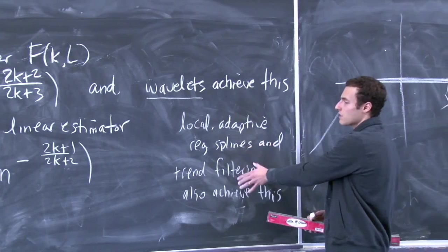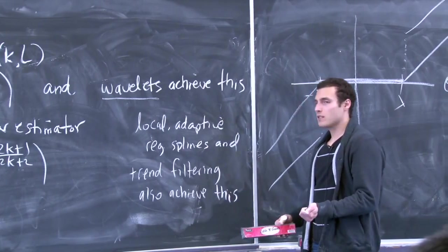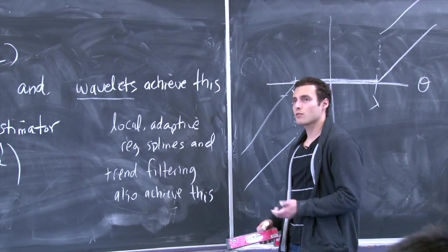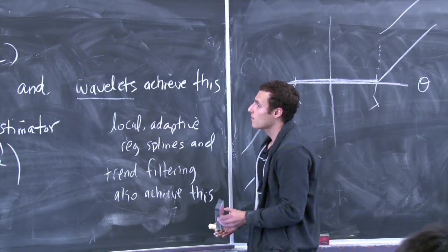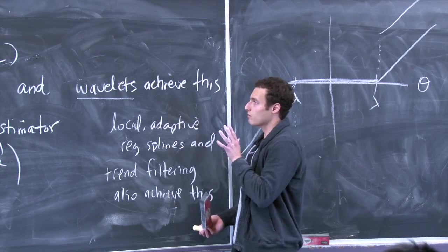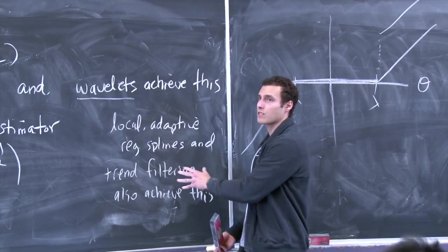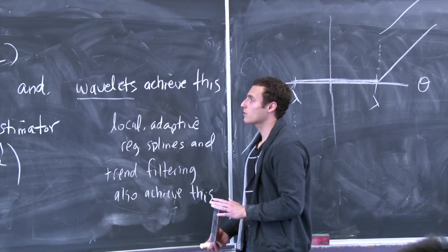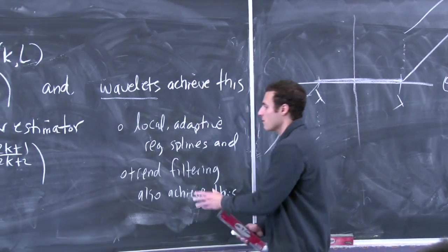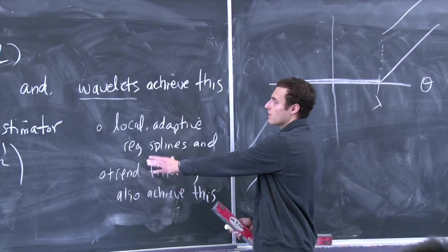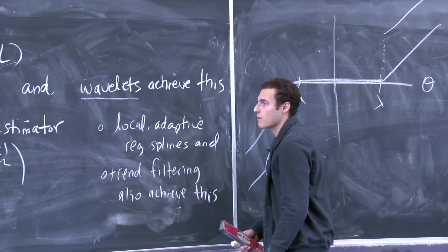Unlike wavelets, locally adaptive regression splines and trend filtering aren't restricted to evenly spaced points or n being a power of 2 — they're more generic and flexible. To be fair, there's a lot of theory for wavelets beyond this that makes them very compelling in the cases when they apply, that these methods don't have established. These are also more recent developments: locally adaptive regression splines from around 1997, trend filtering a bit later, both well after wavelets, but with the same optimality properties. Regarding the minimax rate for the Hölder class: for d equals 1, applying traditional linear smoothers to the Hölder class does give the optimal rate n^{-(2k+2)/(2k+3)}, because the smoothness parameter is k+1. Once you move to the bigger function class F(k, L), their worst-case error rate gets inflated to n^{-(2k+1)/(2k+2)}.